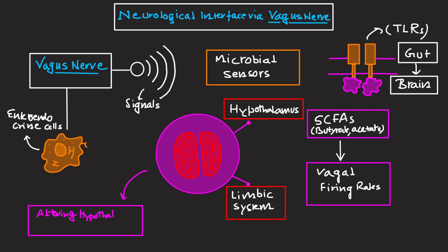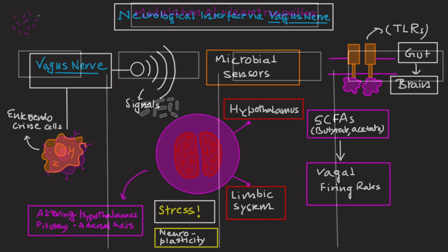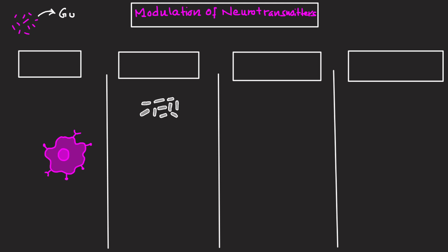These metabolites alter hypothalamic-pituitary-adrenal axis activity, stress response, and neuroplasticity. The vagus nerve serves as a key communication highway between gut microbes and the brain, modulating stress and mood.